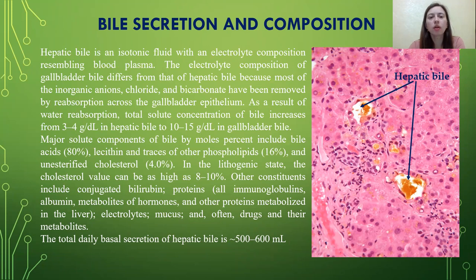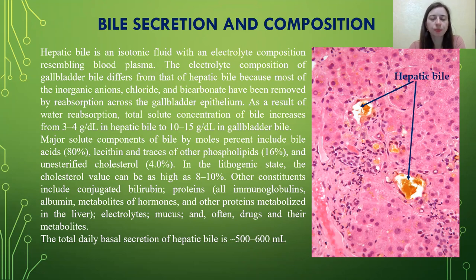Hepatic bile is an isotonic fluid with electrolyte composition resembling blood plasma. The electrolyte composition of gallbladder bile differs from that of hepatic bile because most inorganic anions — chloride and bicarbonate — have been removed by reabsorption across the gallbladder epithelium. As a result of water reabsorption, total solid concentration of bile increases from 3–4 g/dL in hepatic bile to 10–15 g/dL in gallbladder bile. Major solid components of bile include bile acids, lecithin and traces of other phospholipids, and unesterified cholesterol. In the lithogenic state, the cholesterol value can be as high as 8–10 percent.